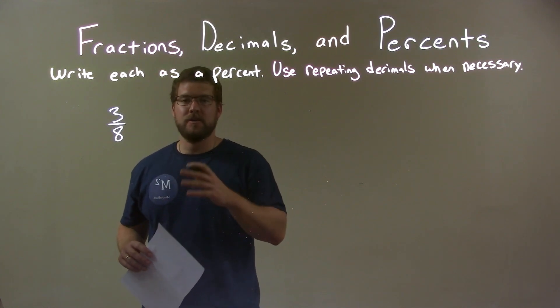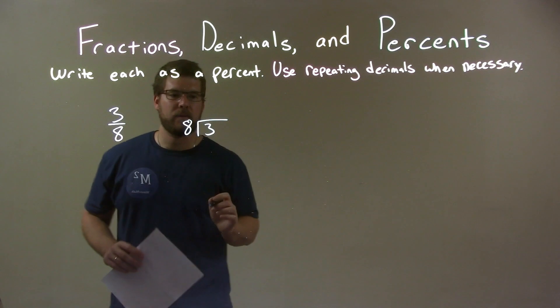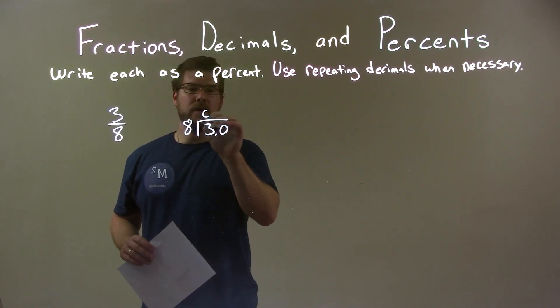I'm going to do long division here to write this as a decimal. So eight goes into three. Well, eight can't go into three directly, so we have 30 here.